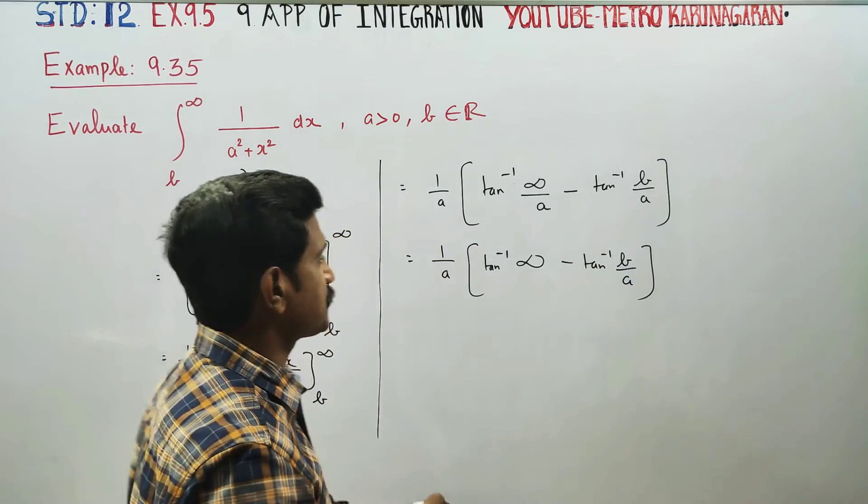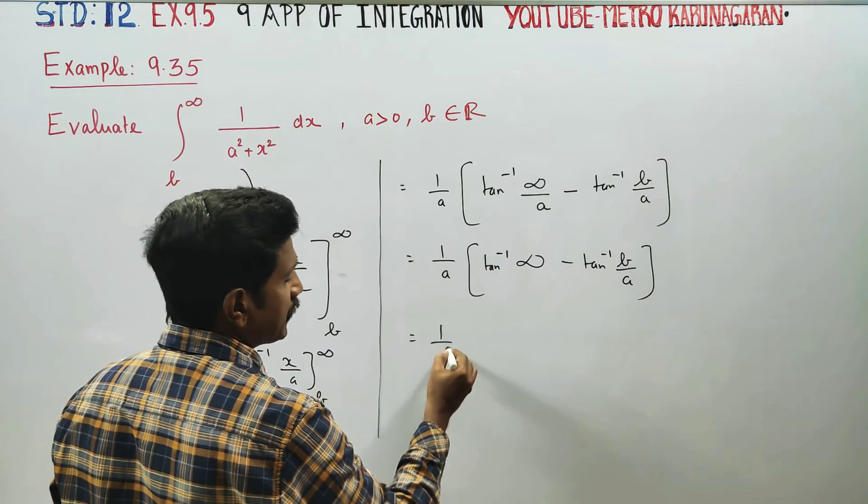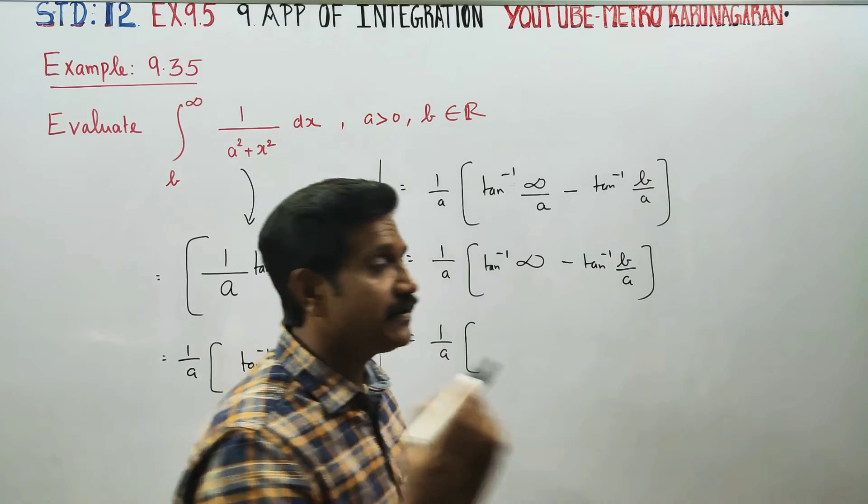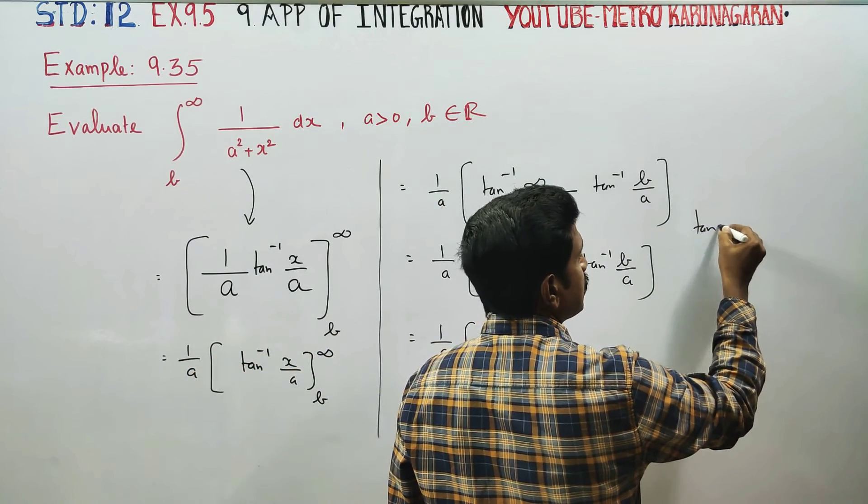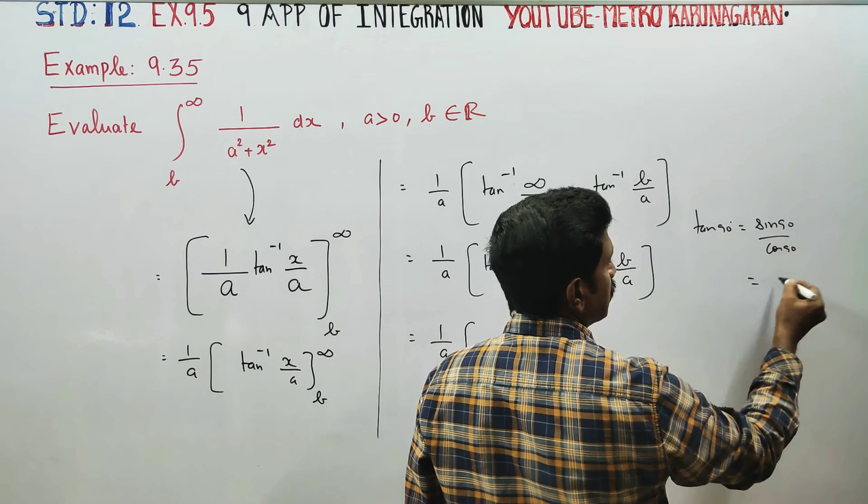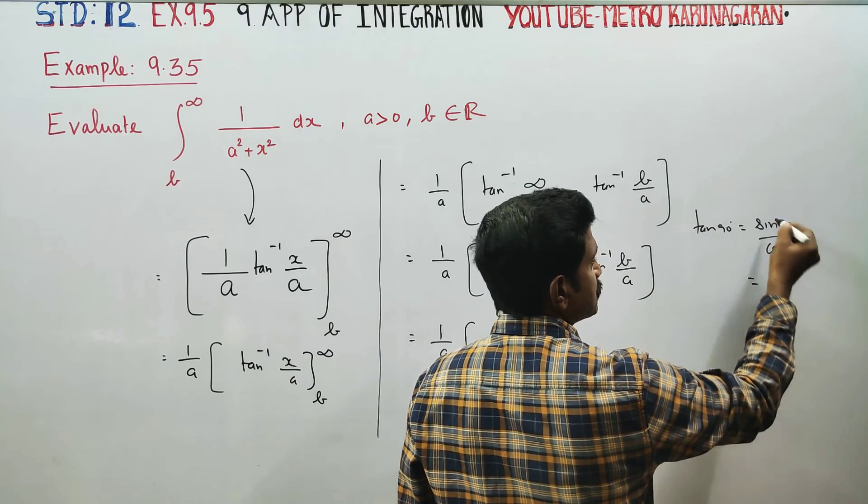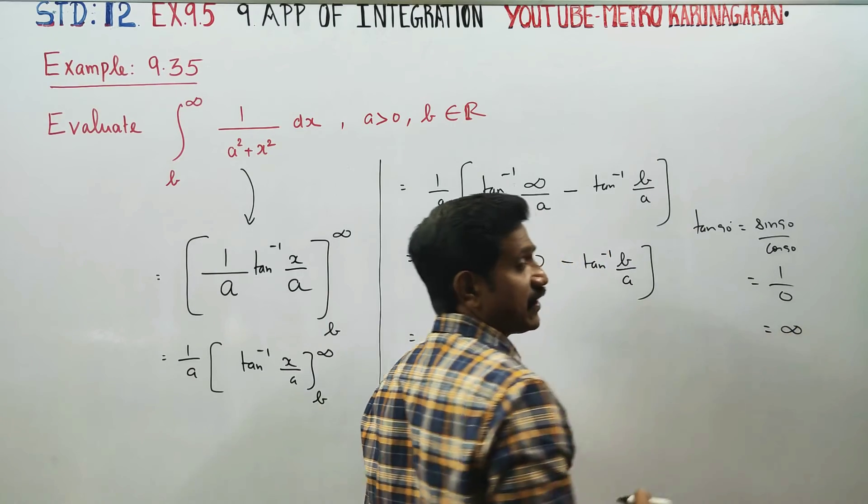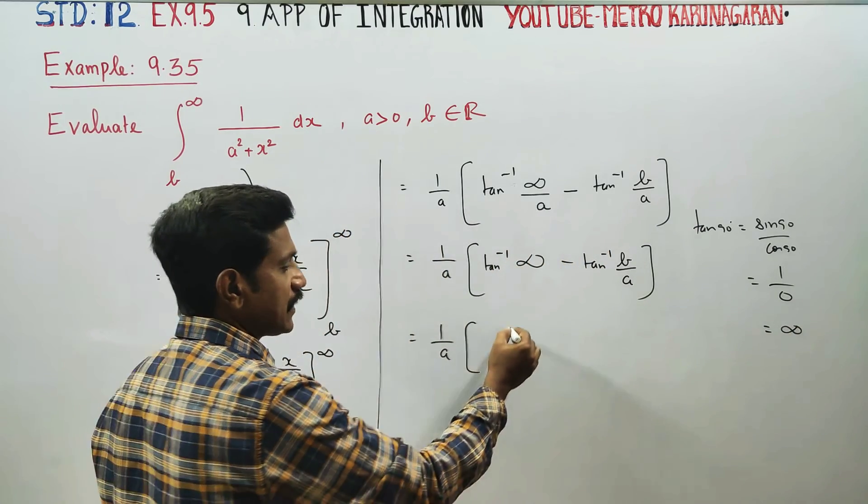But infinity appears at 90 degrees. Tan 90° equals sin 90°/cos 90°. Sin 90° is 1, cos 90° is 0, which gives infinity value. So tan inverse of infinity is π/2.